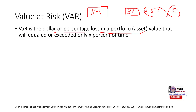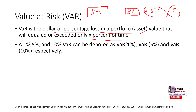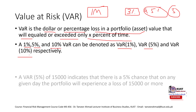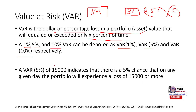VAR is the dollar or percentage loss in the portfolio or asset value that will be equaled or exceeded only X percent of the time, where X represents the confidence interval. We can choose different confidence intervals, but normally 1%, 5%, or 10% VAR is calculated. 1% VAR means 99% confidence level, 5% VAR means 95% confidence level, and 10% VAR means 90% confidence level — denoted as VAR1, VAR5, or VAR10.